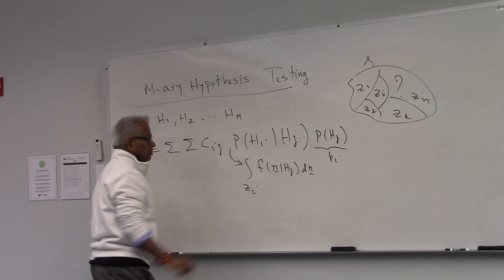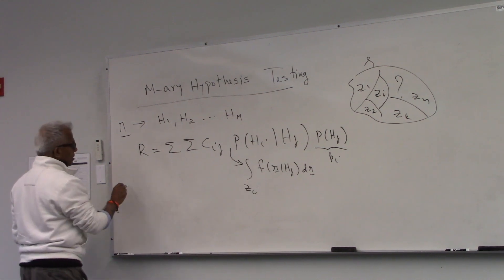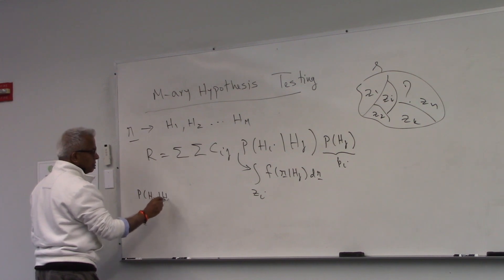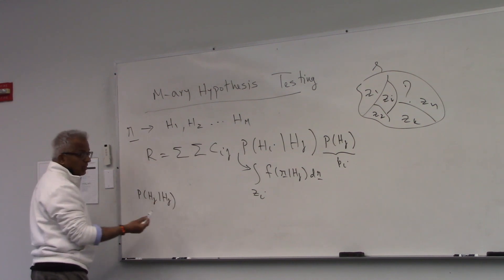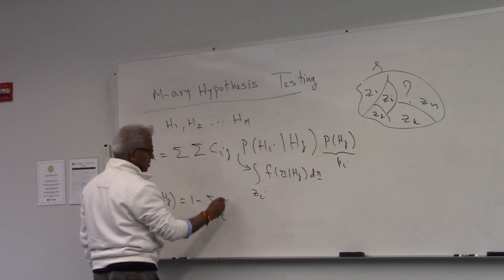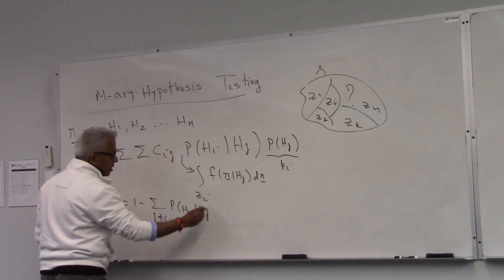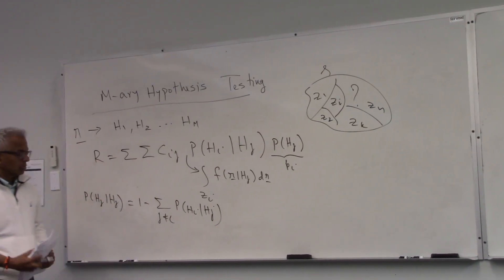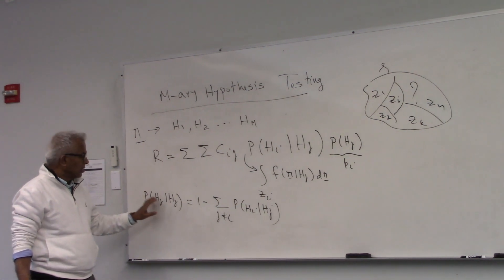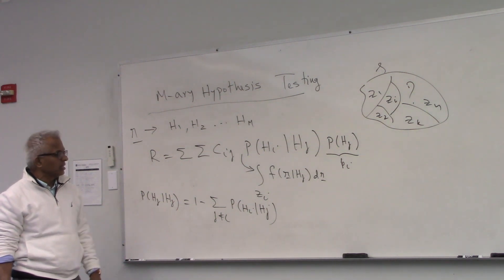This is the probability associated with that decision. The probability of deciding in favor of Hj when Hj is true — you can write it this way — it's not hard to see. It's just that all the probabilities across any hypothesis sum to 1: H1 union through Hm should equal 1. So you get this relationship.